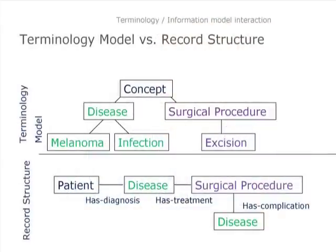Now how does the terminology fit with that? This diagram shows us our terminology model. At the very top we have our top concept, then we have a hierarchy with thousands of surgical procedures, one of which is excision. We also have a hierarchy for diseases, and one of those is melanoma and another is infection.